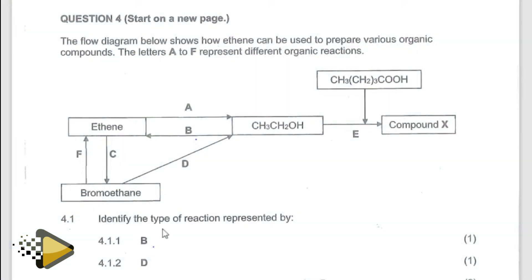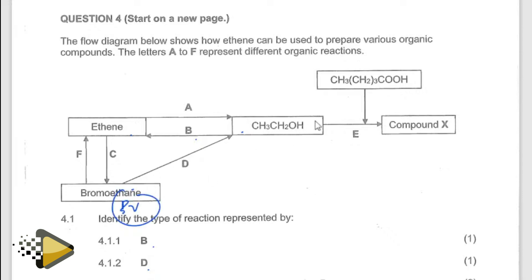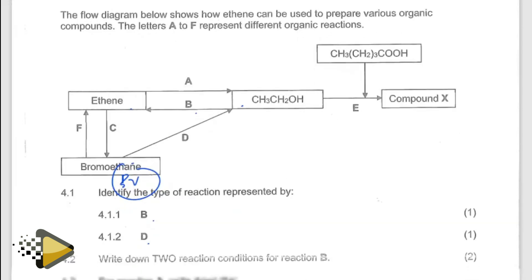What is B? Identify the type of reaction represented by B. B is from here to here, so that's the elimination method — what are you removing? You are removing the water, therefore it is dehydration. From a haloalkane to an alkene, you are substituting, so it becomes substitution or hydrolysis. You can use hydrolysis because water must be present in that reaction.